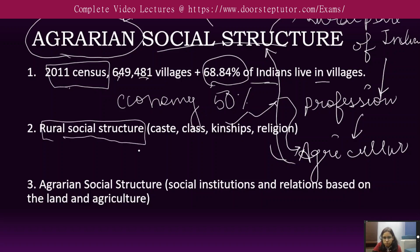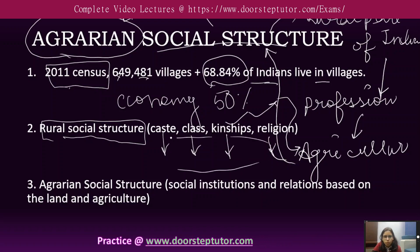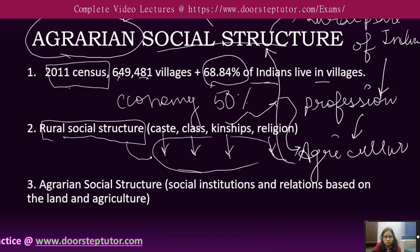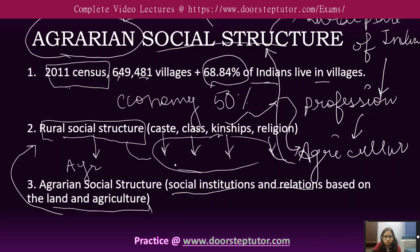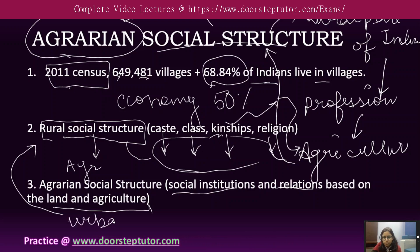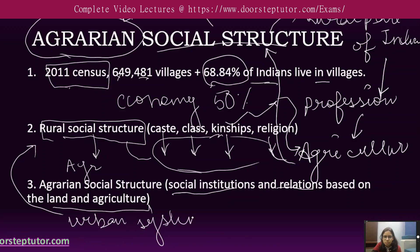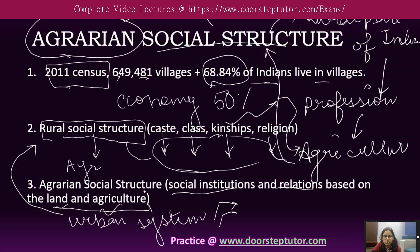Rural social structure has caste, class, kinship, and religion — they all have a stable system in rural social structure. But when we talk about agrarian, we only want to talk about the social institutions and relations which are based on land and agriculture. Suppose there are people who have families and kinship relations in villages but are part of the urban system because they have their job there — they will not be considered mainly in agrarian social structure, because their institutions and relations are not totally based on land and agriculture.